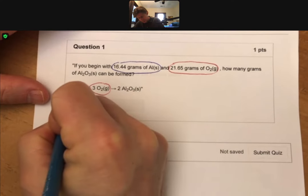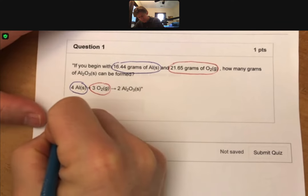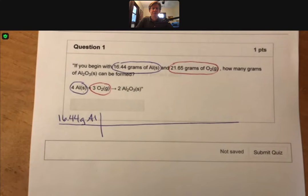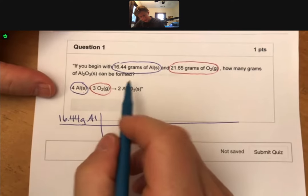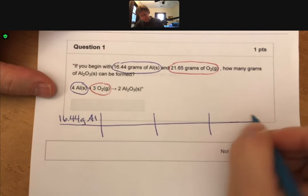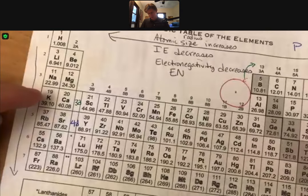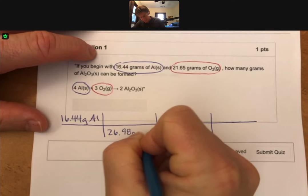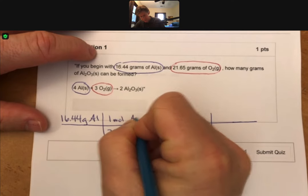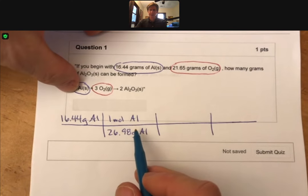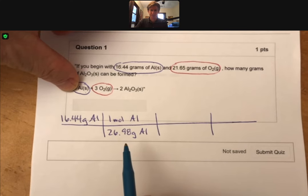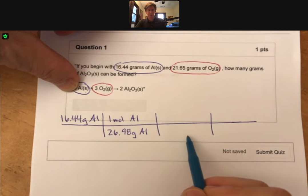We have 16.44 grams of aluminum. This particular problem is more grandma makes magnificent gravy, or whatever you've come up with. And it always will go like this. Turn grams into moles using the molar mass from the periodic table. We have aluminum, 26.98. And the molar mass never considers the coefficients. The coefficients are always in this step over here, at least in the way I do it.